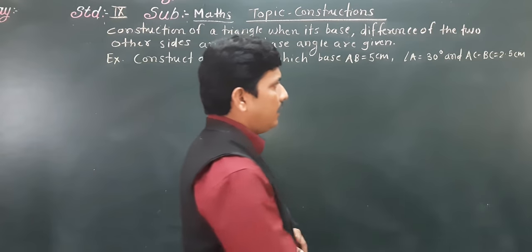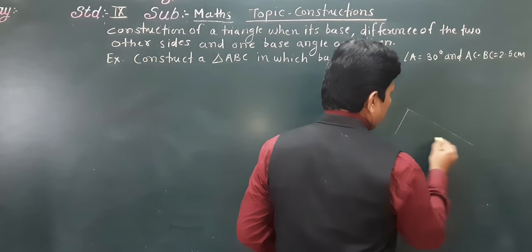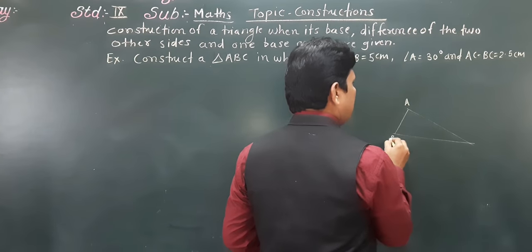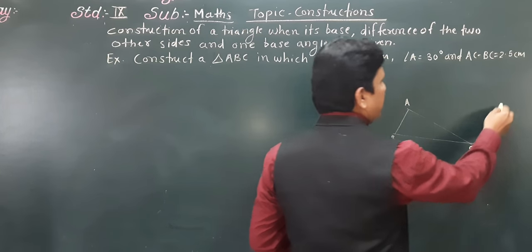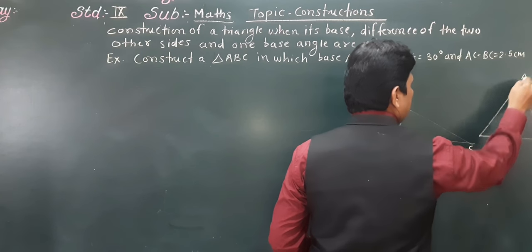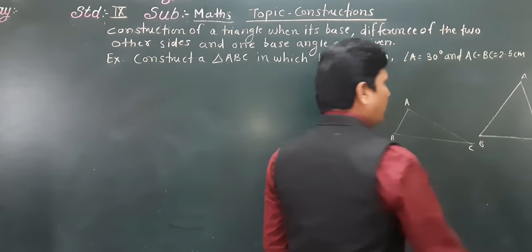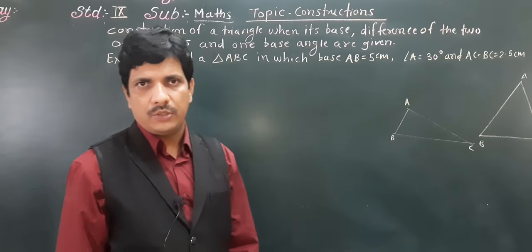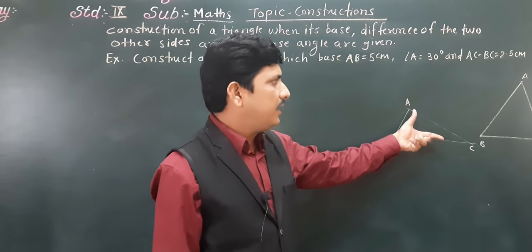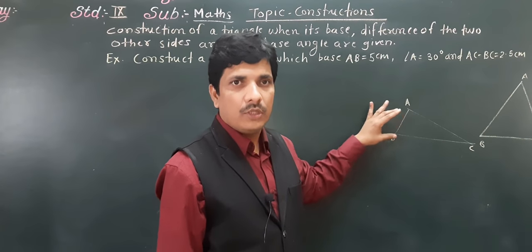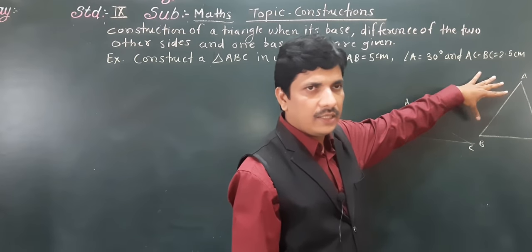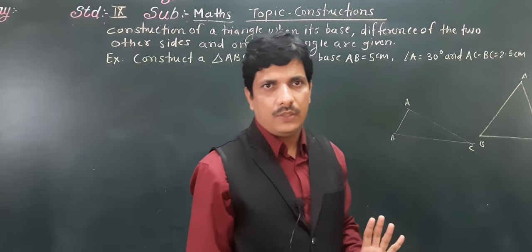Suppose triangle ABC — here we have two triangles ABC. If you observe the difference between these two triangles: in the first, AB is greater than AC, and in the second, AB is smaller than AC.